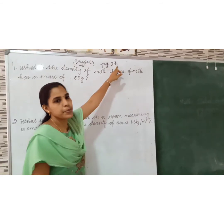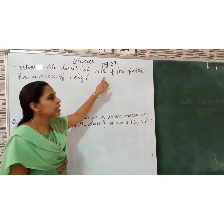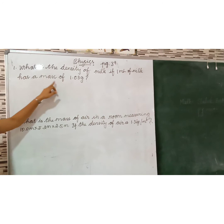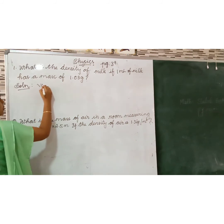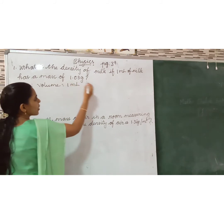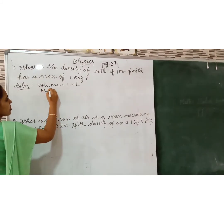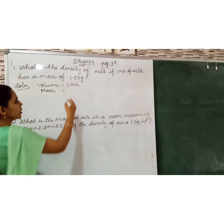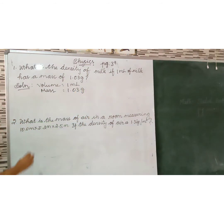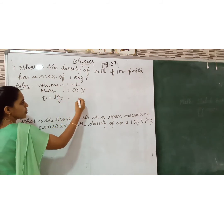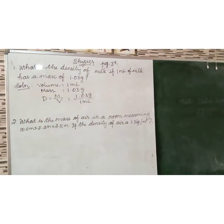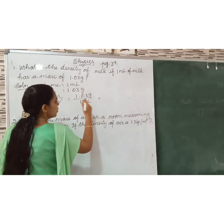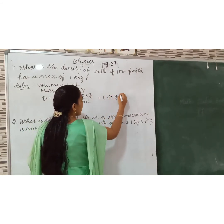Exercise problem from page number 39: what is the density of milk if 1 milliliter of milk has a mass of 1.03 gram? Volume equals 1 milliliter, mass equals 1.03 gram. Density equals mass divided by volume: 1.03 gram divided by 1 milliliter equals 1.03 gram per milliliter. That is the density of milk.